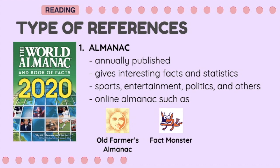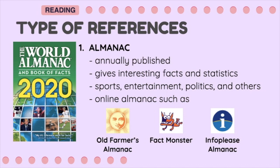Fact Monster is the best reference site for children. Lastly, InfoPlease Almanac is a comprehensive collective of statistics on arts, business, sports, and more. These online versions are a big help, especially during this time of pandemic, since we are not allowed to go outside or to a library to borrow printed sources. Now, the internet has these resources so we can still look for the information we need in just one click.